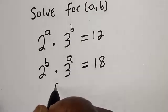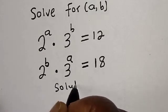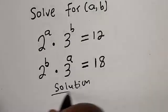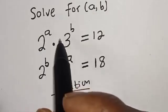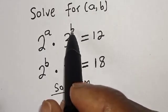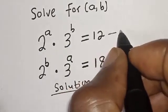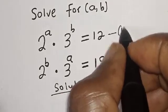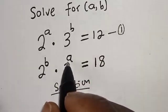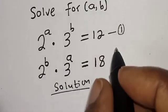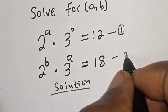Solution. 2 raised to power A multiplied by 3 raised to power B is equal to 12 — this is equation 1. Then 2 raised to power B multiplied by 3 raised to power A is equal to 18 — this is equation 2.